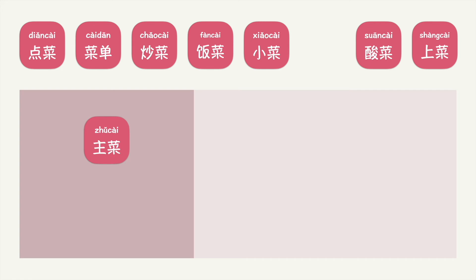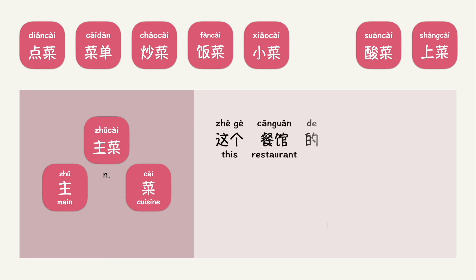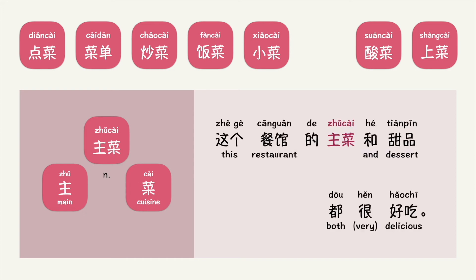煮菜 is a noun. 煮 means main, 菜 means cuisine. Put into context, you can say: 这个餐馆的煮菜和甜品都很好吃。 — Main cuisine. What do you think 煮菜 means? 煮菜 refers to a main dish or an entree.